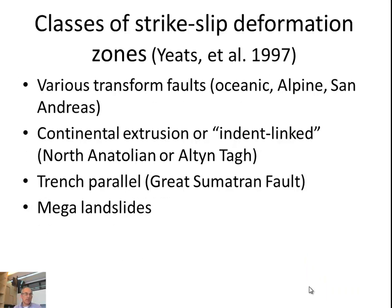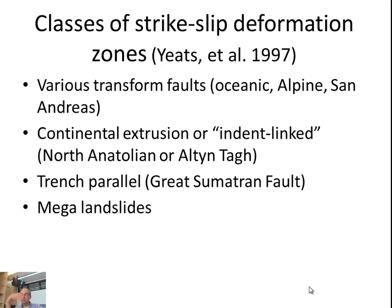The main places we find strike-slip faults are various transforms — obviously oceanic transforms — but the Alpine Fault is the connection of two subduction zones that have opposite dips. There's continental extrusion or indent-linked faults, like the North Anatolian Fault or the Altyn Tagh. There are also arc-parallel strike-slip faults, one of the most famous being the Great Sumatran Fault, and sometimes the edges of big landslides will have strike-slip motion, because as you go from the slide to the stable zone on the other side, there has to be horizontal motion between them.